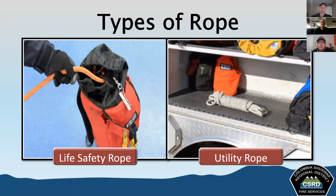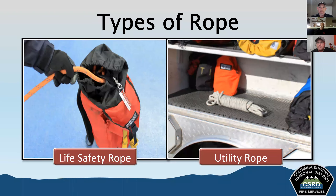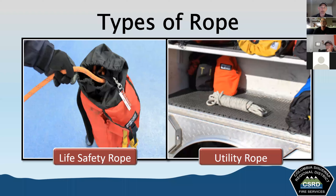There are generally two classifications of rope. The first is life safety rope, which is used to support rescuers or victims during incidents or while training. They must meet the requirements of NFPA 1983. Life safety rope can be further classified into two specific categories: escape rope and water rescue throw lines. The other type is utility rope, used in any situation not involving life safety.